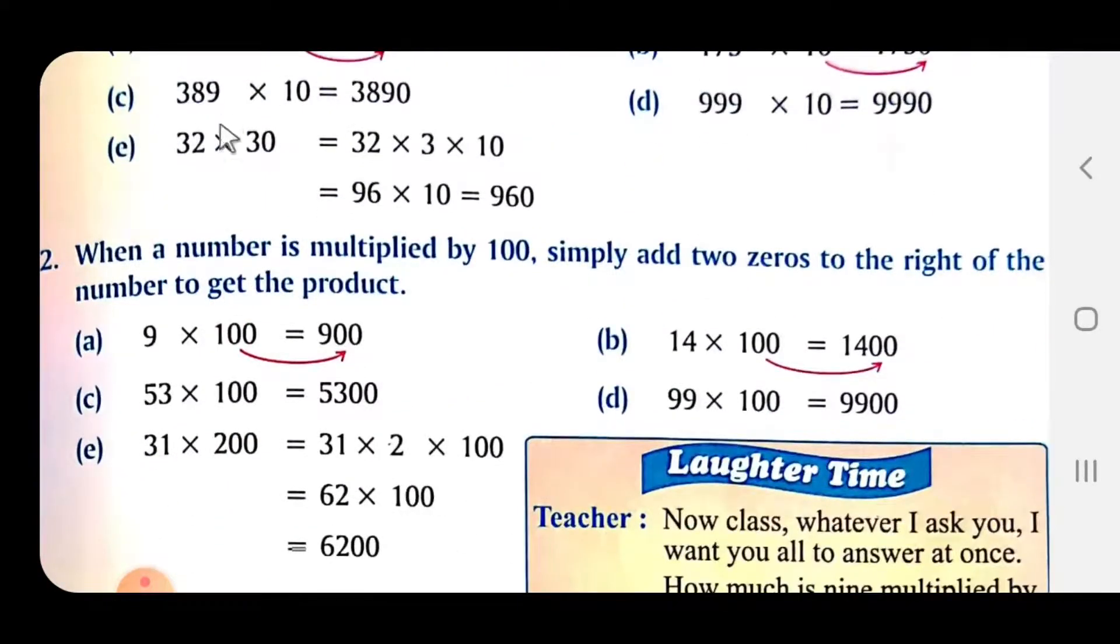When a number is multiplied by 100, simply add two zeros to the right of the number to get the product. 9 multiply by 100 = 900. 14 multiply by 100 = 1400. Add two zeros. 53 multiply by 100 becomes 5300.